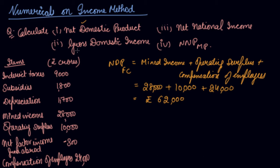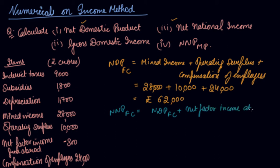Now we have to find out the net national income. Your national income is your NNP at FC. From DP you have to come to NP, which means NDP at FC plus net factor income from abroad. That is 62,000 plus net factor income from abroad which is minus 300 — meaning you have paid more and received less. So it comes out to be Rs. 61,700.